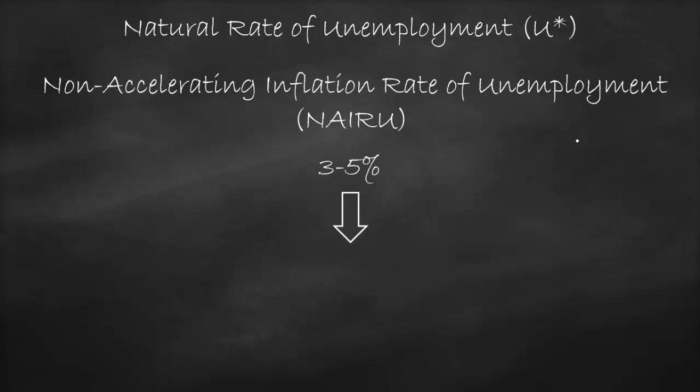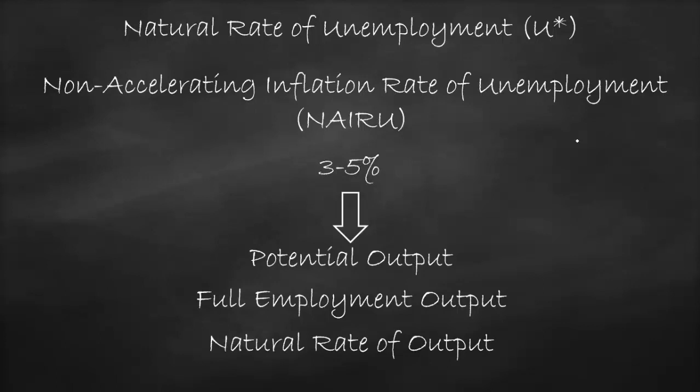Therefore, at this unemployment rate, we reach our potential output. This is our full employment output. Full employment here doesn't mean unemployment rate equal to zero, but it means that our unemployment rate is at its lowest at NAIRU, or natural rate of unemployment, or we can call it natural rate of output, which is the maximum output we could reach by utilizing all our resources in terms of labor, capital, and technology. Therefore, our unemployment rate will be at the lowest, which is NAIRU.